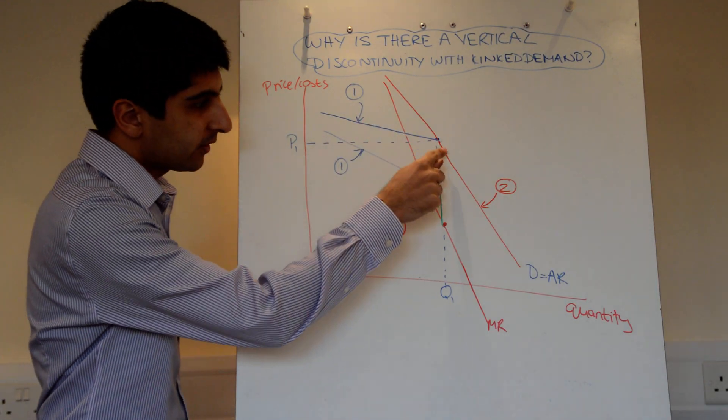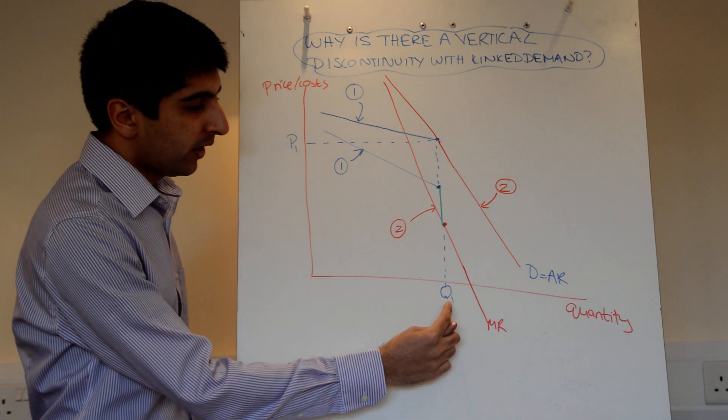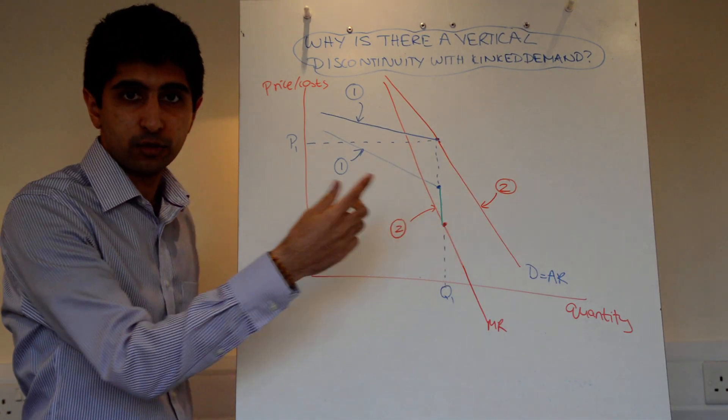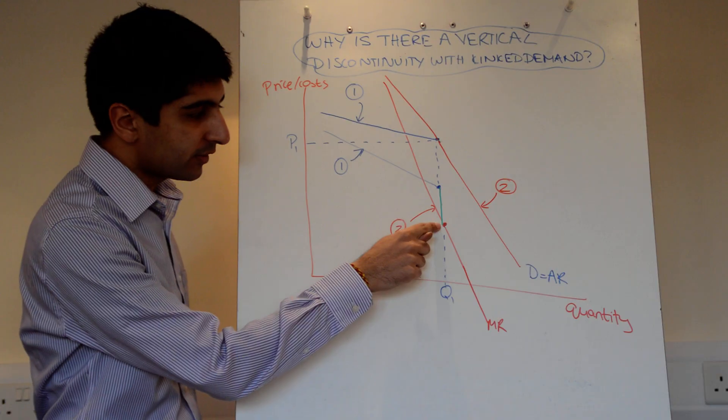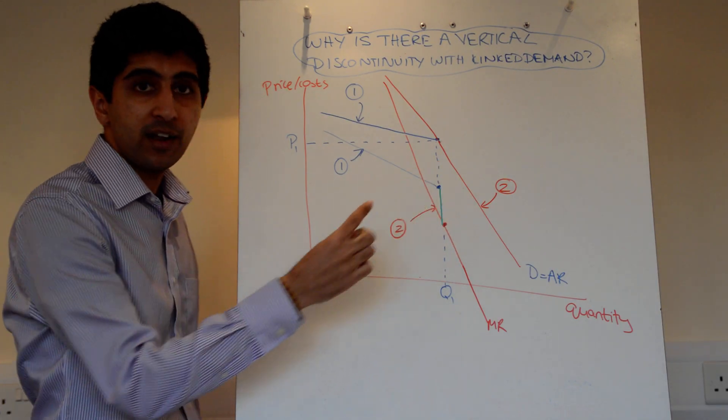and the next red demand curve takes over. But, at this level of quantity q1, the red marginal revenue curve, which corresponds to the red demand curve, actually starts down here. There is no connection that takes place within this gap.